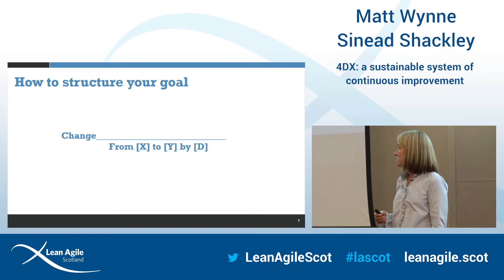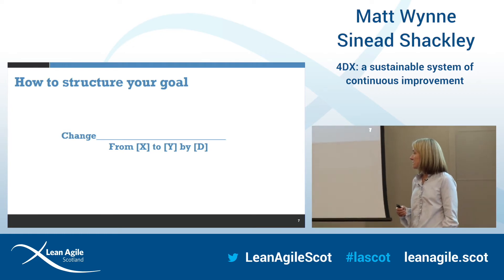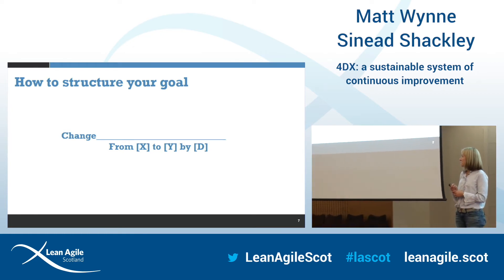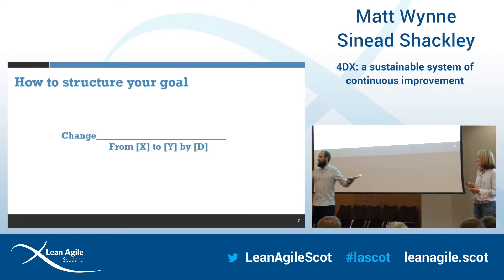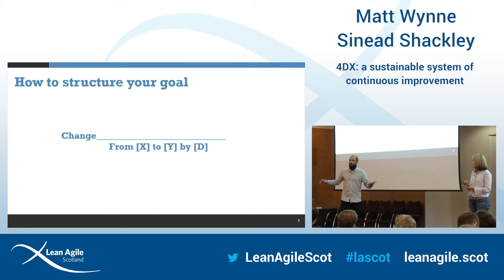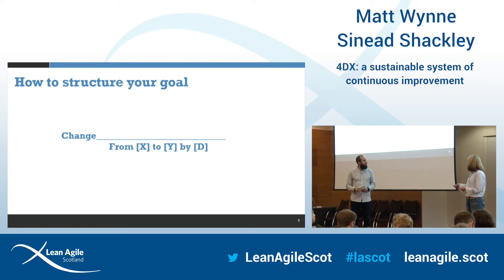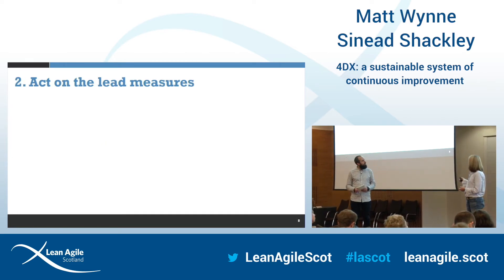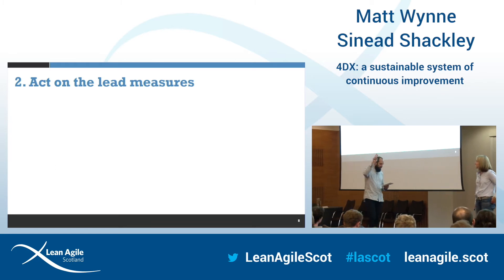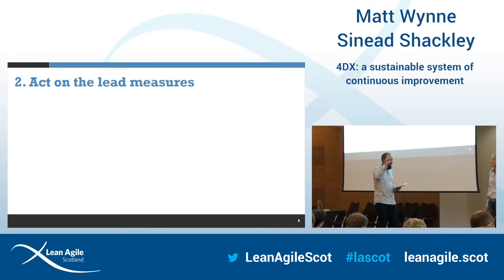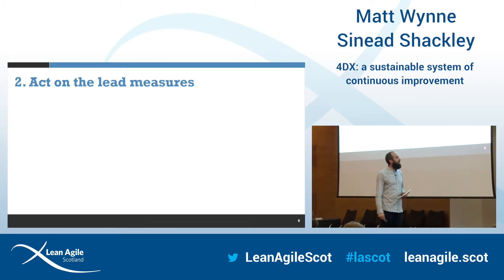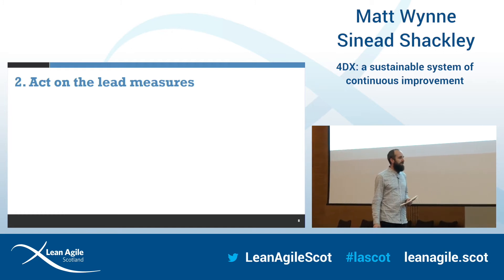Usually the first thing teams have to do is go away and start gathering initial data just to get a baseline of what X is. That might be for four or five or six different things you think you might want to change — it's useful to measure all of them just to see where you're at. So, discipline two: act on the lead measures.